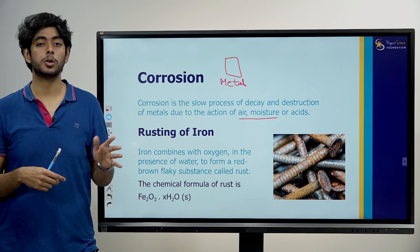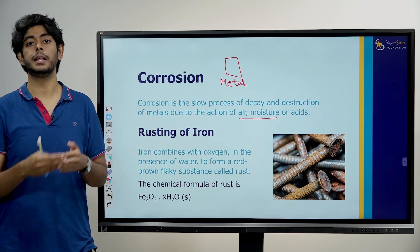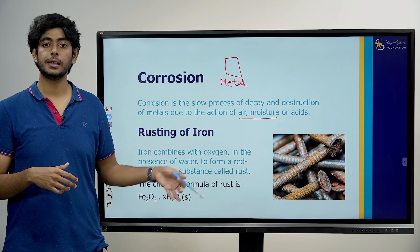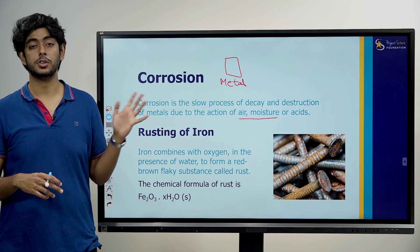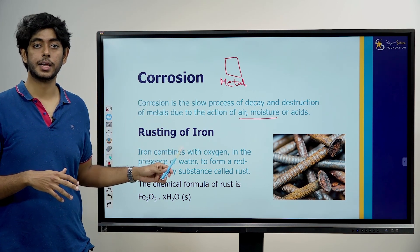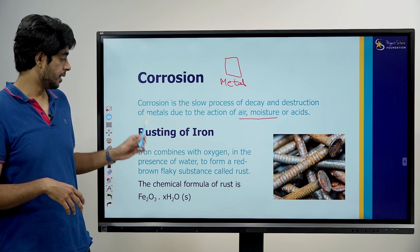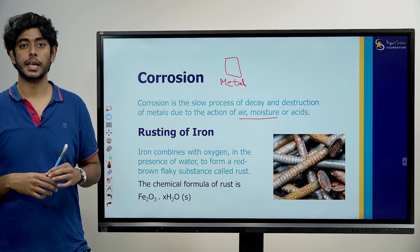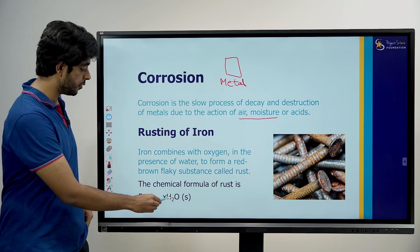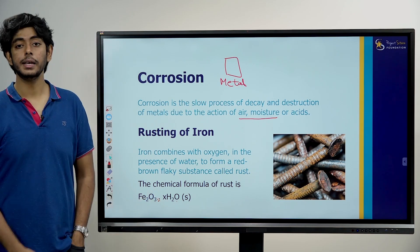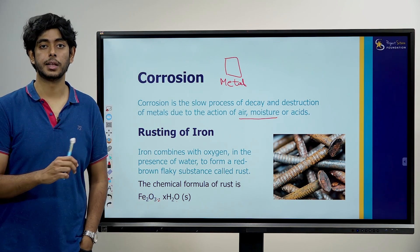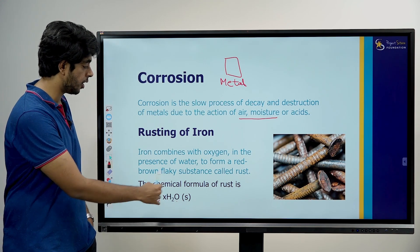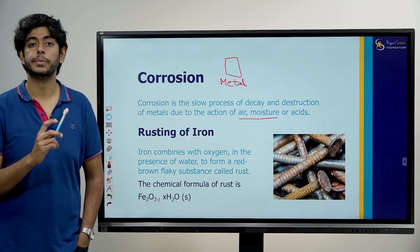If you get cut by a rusted nail, you need to get a tetanus shot injection. Rusting of iron is an example of corrosion. The chemical formula of rust is ferric oxide — Fe2O3 — associated with water, dot H2O. So rust is ferric oxide with water.